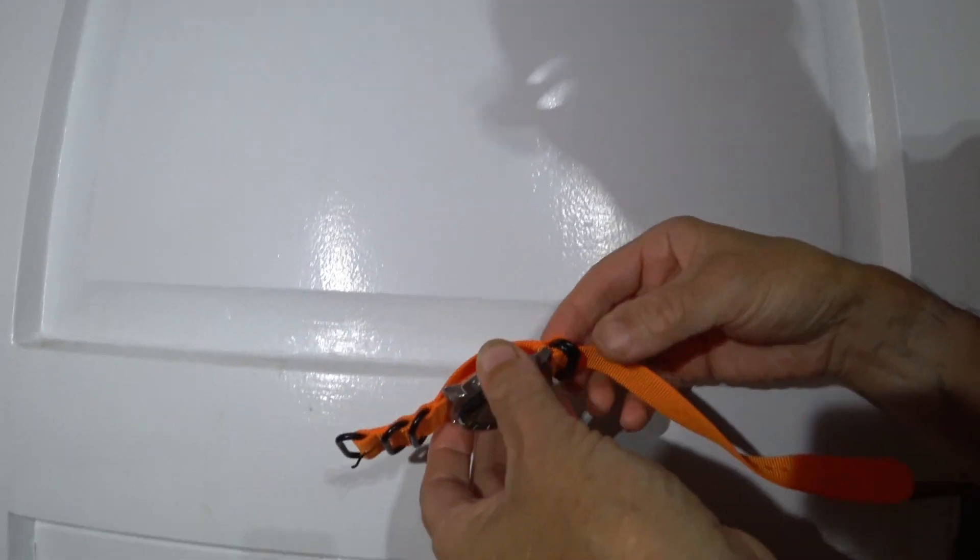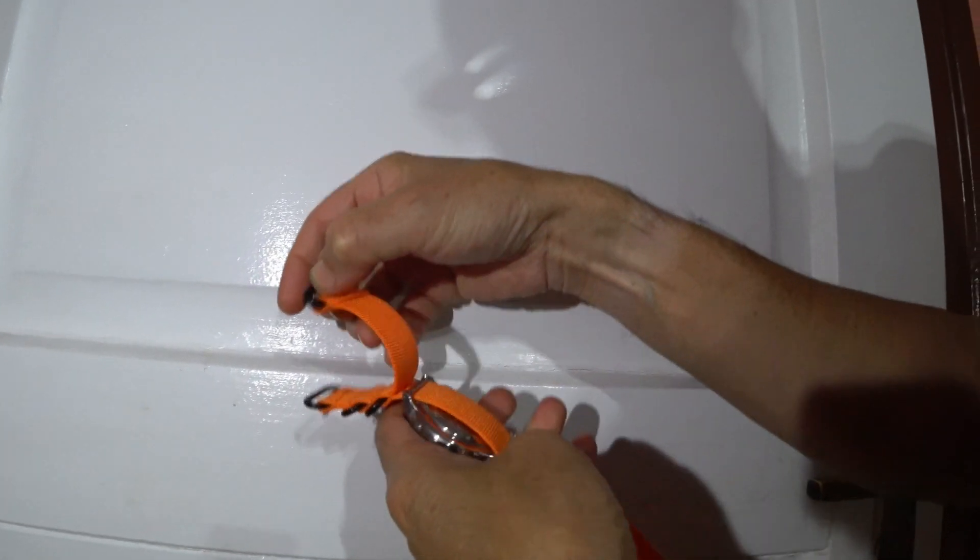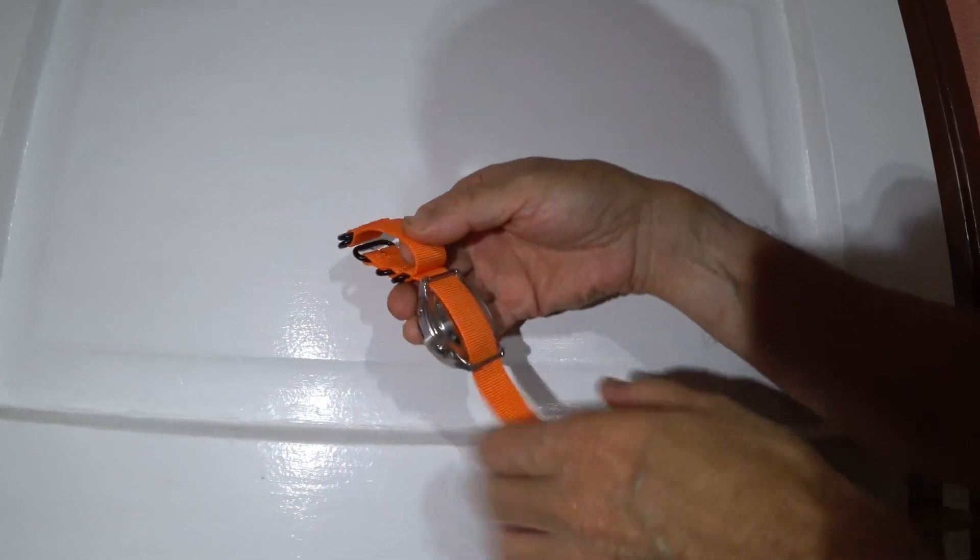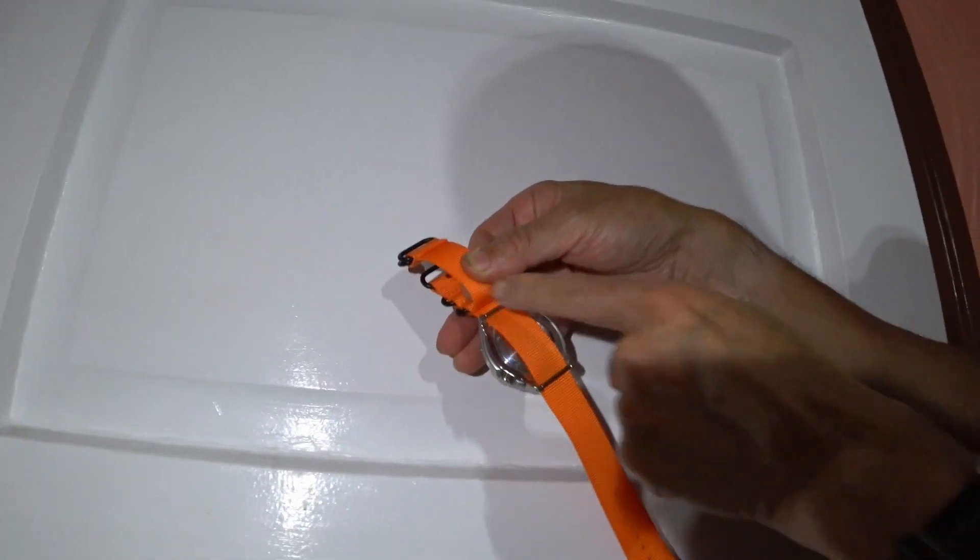So the first thing is, let me just take the whole thing off altogether. What you do is you slide the main part of the band under the pins of your watch. You can see that there.